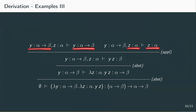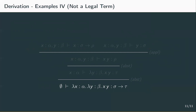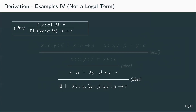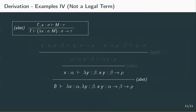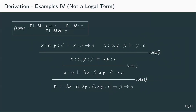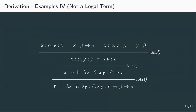As the last example, we look at a derivation that doesn't work: from the empty context, lambda x of type alpha, lambda y of type beta dot x applied to y. Since we need an arrow type for an abstraction, let's put sigma to tau. Since x is of type alpha, sigma has to be alpha. Applying the abstraction rule, lambda y of type beta dot xy is again an abstraction with input beta, so tau has to be some type beta to rho. Applying the abstraction rule again, we reach an application and get two premises. We can see that sigma has to be beta for the second premise to be true. But the first premise can't be saved: x needs to be of type beta to rho for some rho, but it's of type alpha. This doesn't work, so this term is therefore not legal.